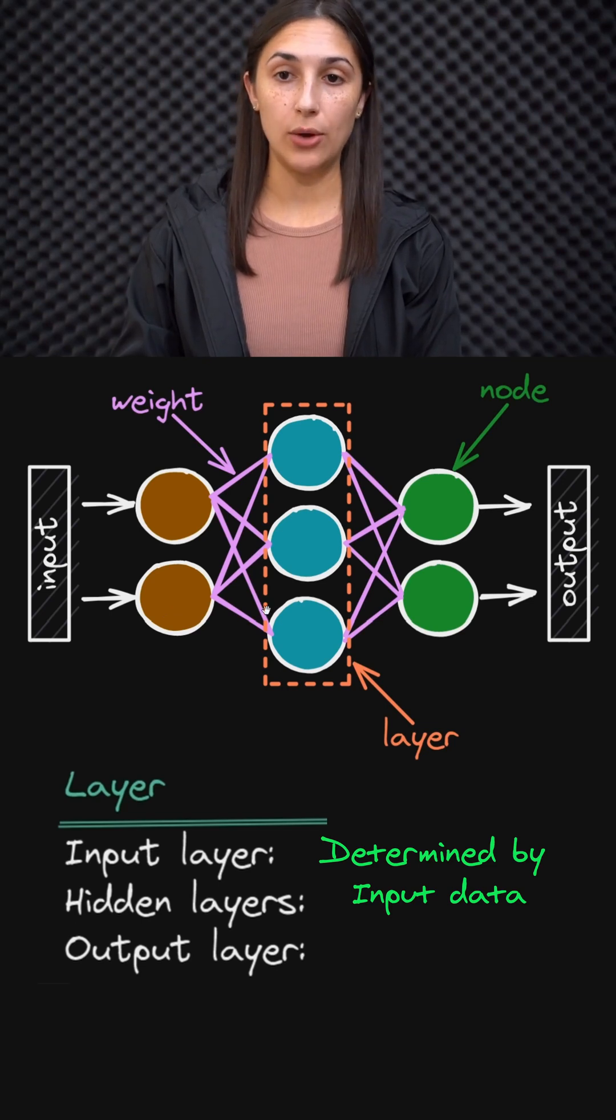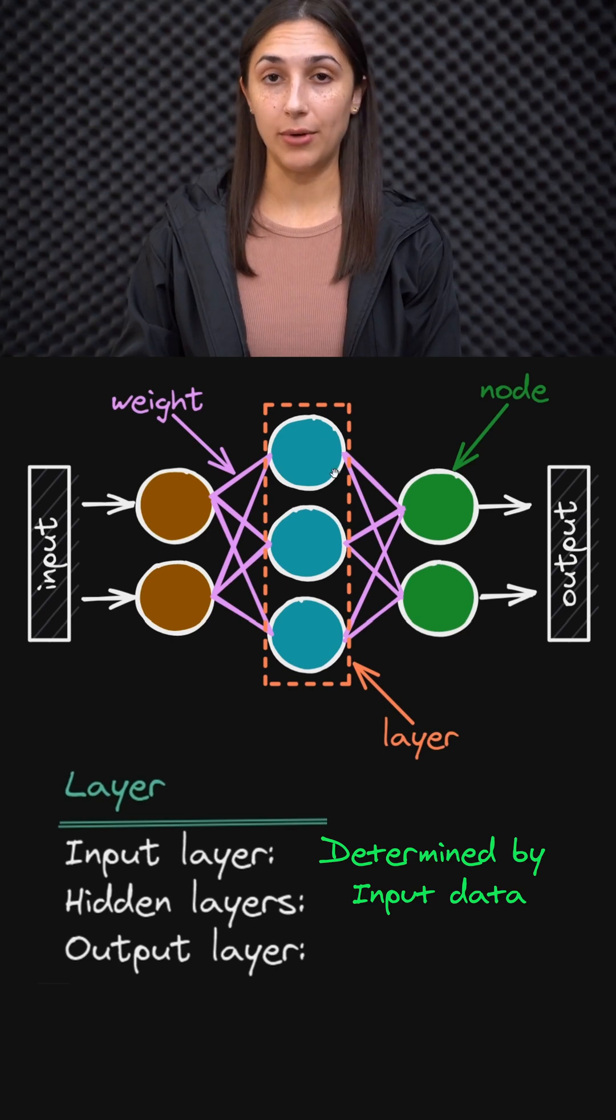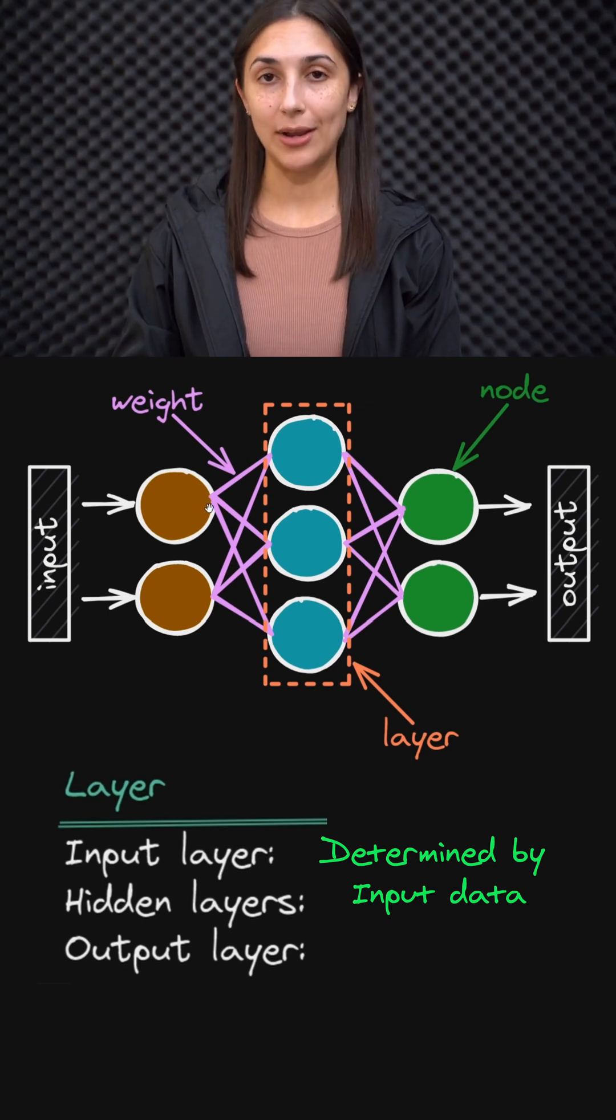The hidden layer nodes are actually performing some type of operation on that data. So the input layer has the number of nodes that is equivalent to the number of features in our input data.